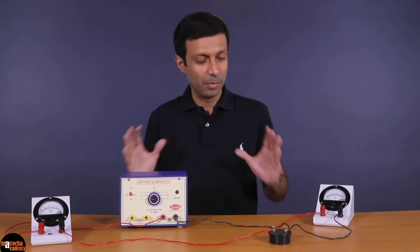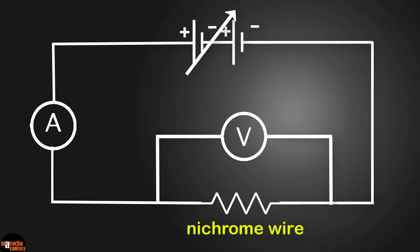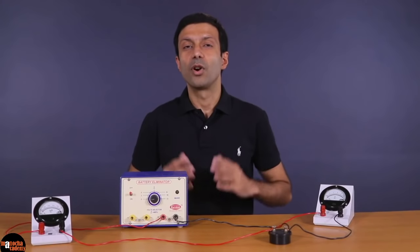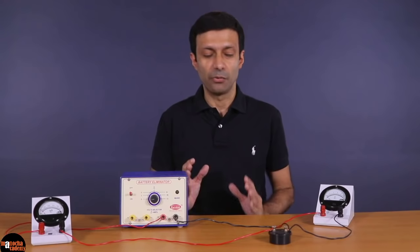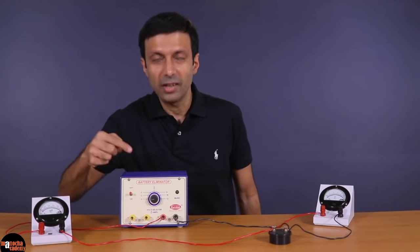If you draw the circuit diagram for our setup, it will look something like this. Here is the nichrome wire inside the black box. The voltmeter (marked with the V symbol) is connected in parallel across the ends of the wire, and the ammeter (marked with the A symbol) is placed in series with the wire. The battery is marked with an arrow, and since our battery is a variable voltage supply, we can change the voltage by turning the knob.